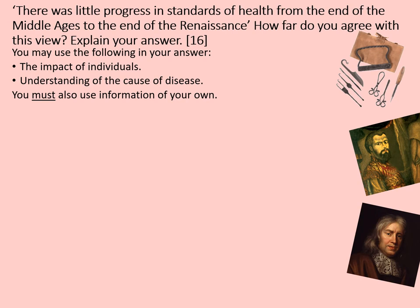Note that 'health' is not the same thing as medical understanding — it's about how likely people are to get a disease, how likely they are to die from it, and things like life expectancy. Do not fall into the trap of thinking that the role of individuals always had a big impact on how healthy people were. It might just have had a big impact on what people understood about disease. I recommend the use of PEEL paragraphs — point, example, explain, and link. Structure your first argument around ways in which health didn't really improve, giving examples of continuity from your mind map or cards.